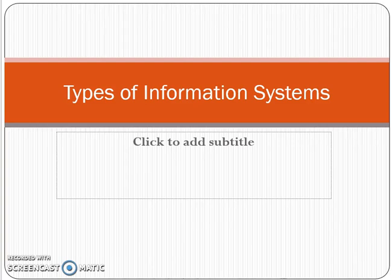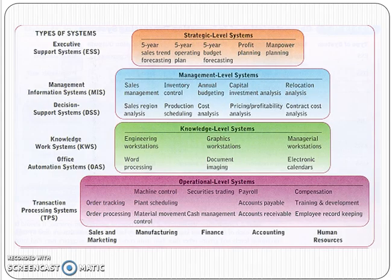Hello, good morning friends and students. Today we are going to discuss and learn the important topic of Management Information System — types of information systems. This slide shows the organizational levels. Generally there are three organizational levels: the operational level, the managerial level, and the topmost strategic level. But in this slide you will find four levels — one important level added is the knowledge level. Today's agenda is how information systems exist at various organizational levels and how different functions are utilized.